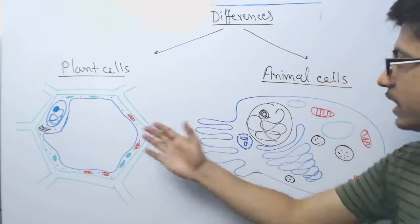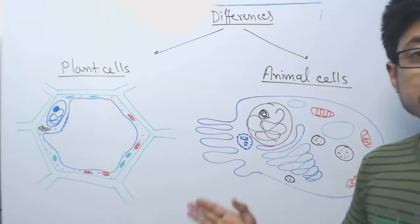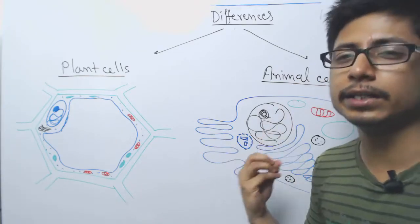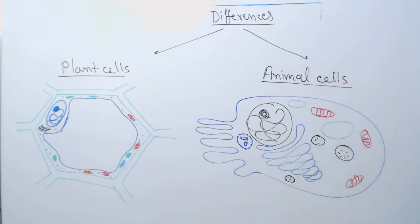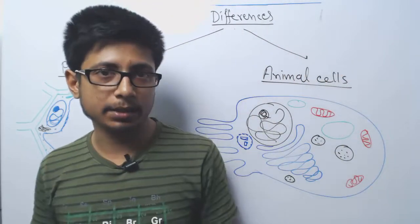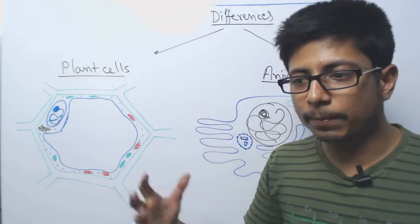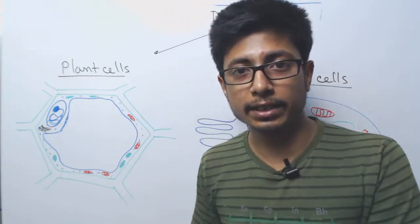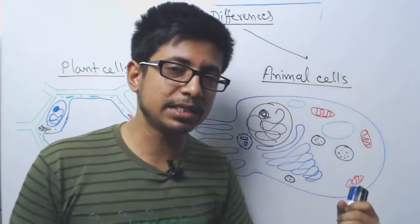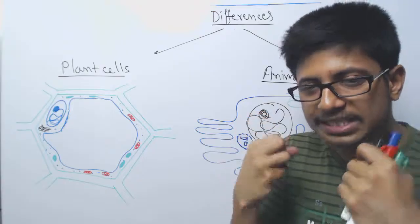I've now drawn the two types of cells — plant cell and animal cell. I want you to focus and try to find the differences by looking at the structures. Before answering, what we want to know is that plant cells are capable of doing certain things for survivability while animal cells have to do some other things.